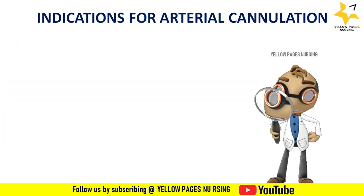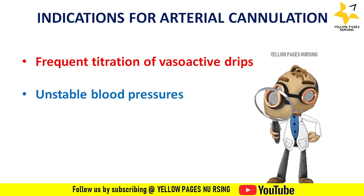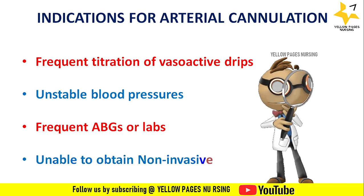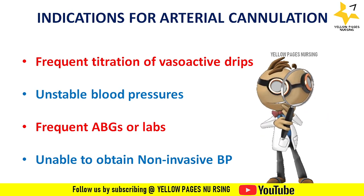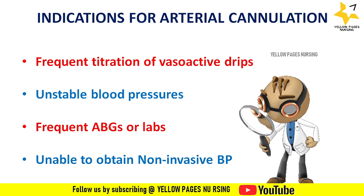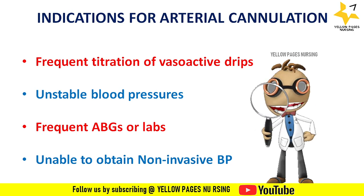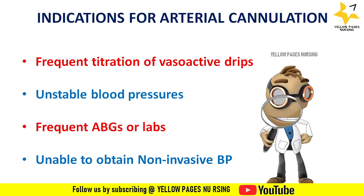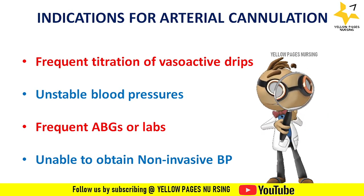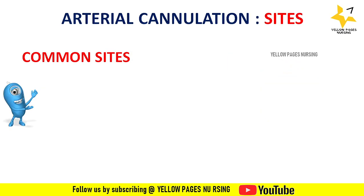Indications for arterial cannulation include frequent titration of vasoactive drips, unstable blood pressures, frequent ABG or labs, and inability to obtain non-invasive blood pressure, as well as certain cardiac surgeries. Frequent arterial blood gas analysis is indicated in patients with respiratory failure who are on a ventilator and in cases with severe acid-base disturbances. When there is an arterial line, it becomes easy and painless to access for ABG sampling.